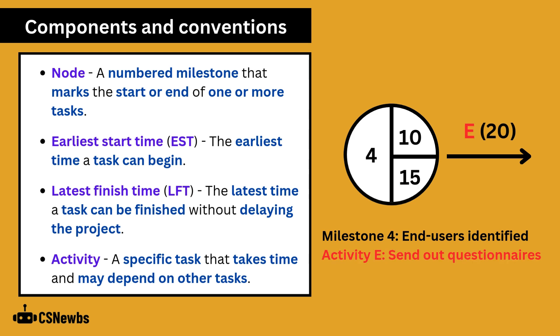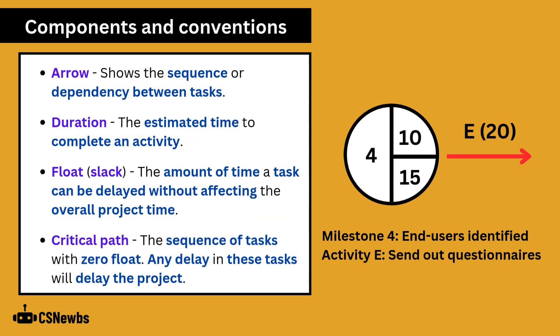There's also activities, which are specific tasks that take time and may depend on other tasks. Arrows are used to show the sequence or dependency between tasks. The duration is the estimated time to complete an activity. Float, or slack, is the amount of time a task can be delayed without affecting the overall project time. And the critical path is the sequence of tasks with zero float, so any delay in those tasks will delay the project overall.